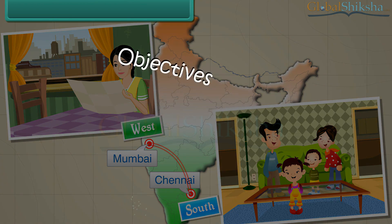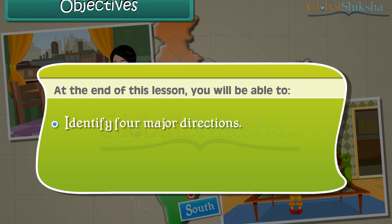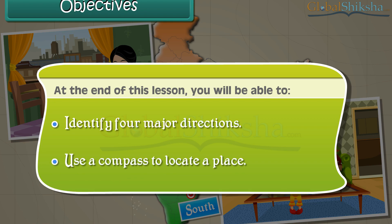Objectives. At the end of this lesson, you will be able to identify four major directions and use a compass to locate a place.